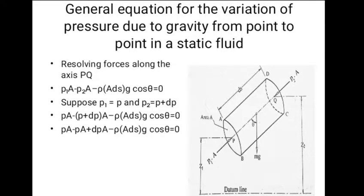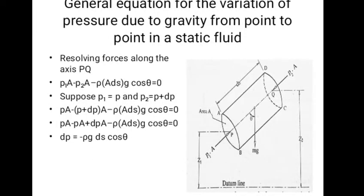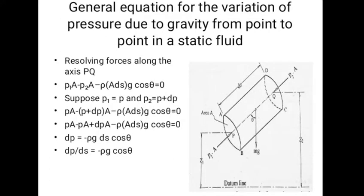Opening the brackets in the above equation, we get PA minus PA minus Dp A minus Rho A Ds G cos theta equals zero. Simplifying the above equation, we get Dp equals minus Rho G Ds cos theta. Shifting Ds to the left hand side of the equation, we get Dp by Ds equals minus Rho G cos theta.